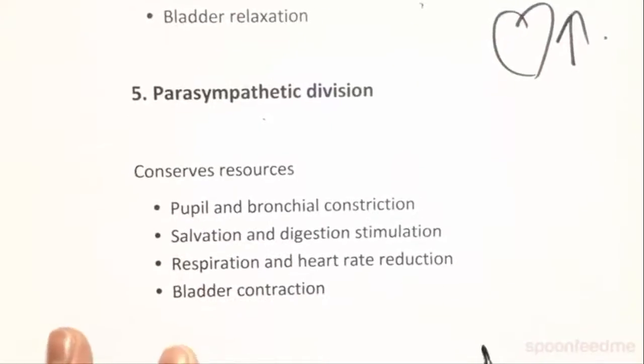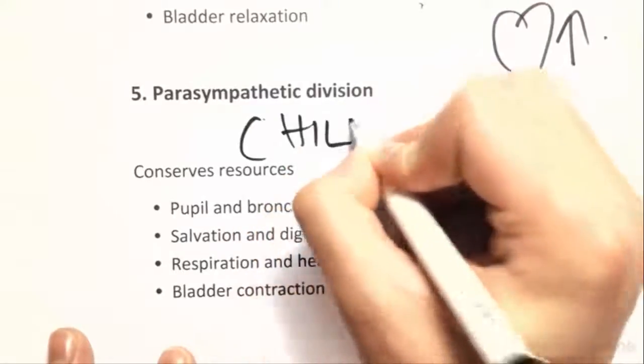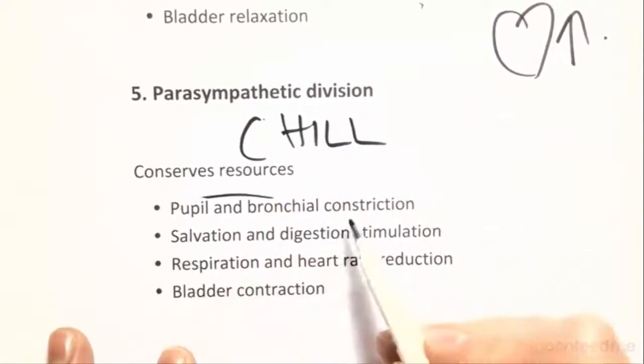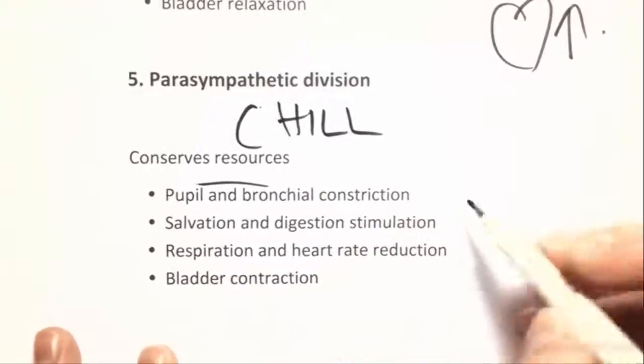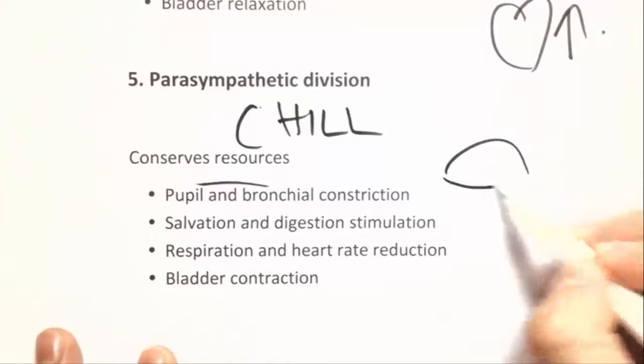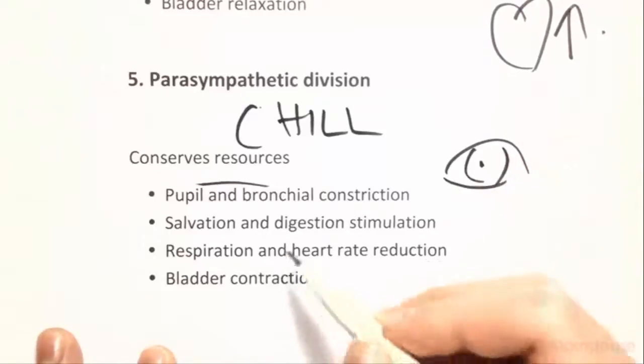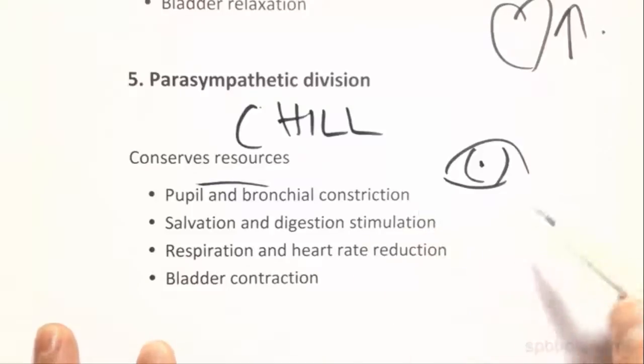Parasympathetic division though is like chill. That's what you've got to think about. It conserves resources. It involves rest and recuperation. So we see the pupils constrict. We see bronchial constriction, so we stop. We breathe out a little bit more. Salivation, digestion stimulation, heart rate goes down.